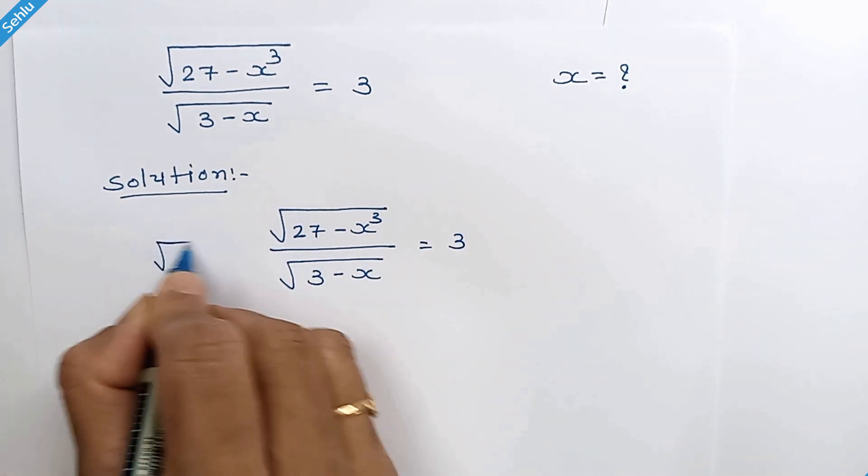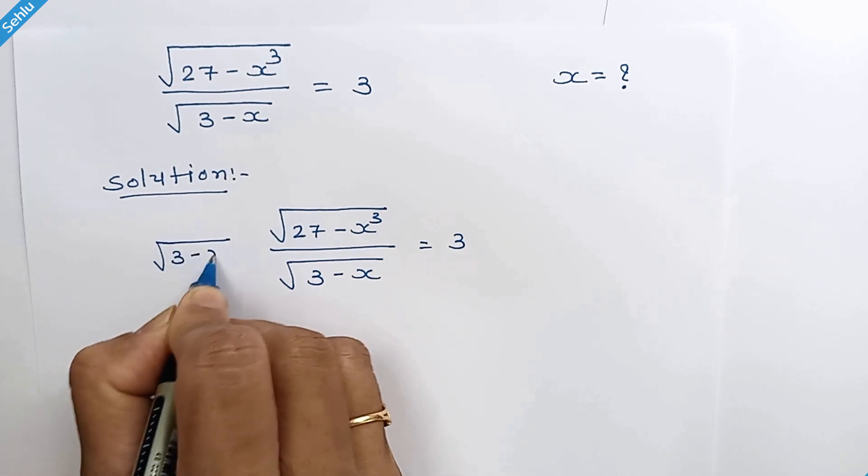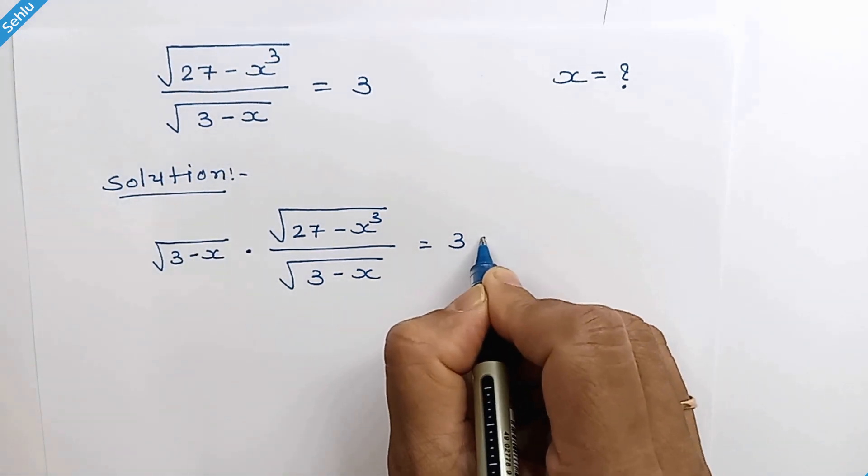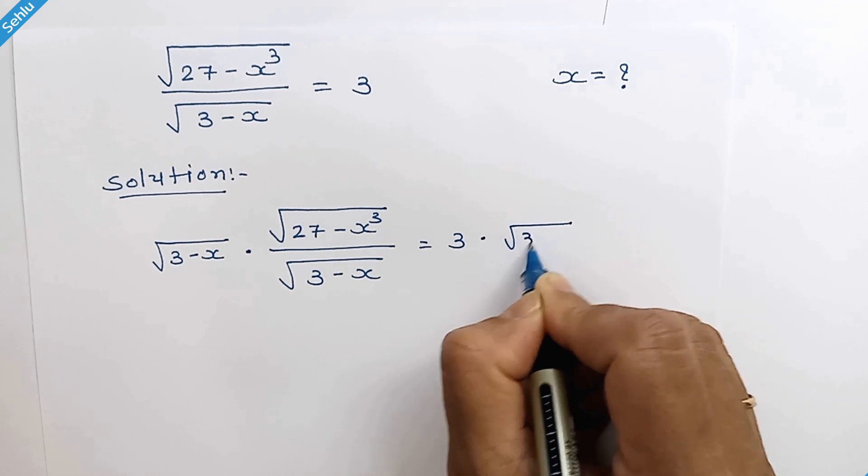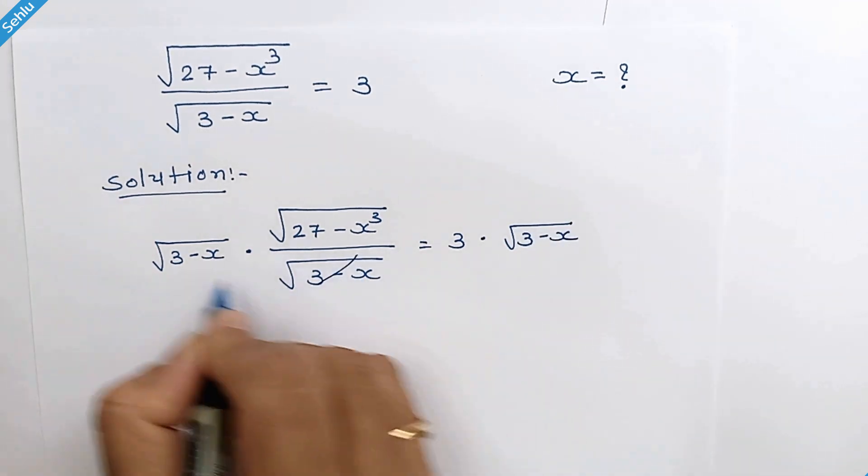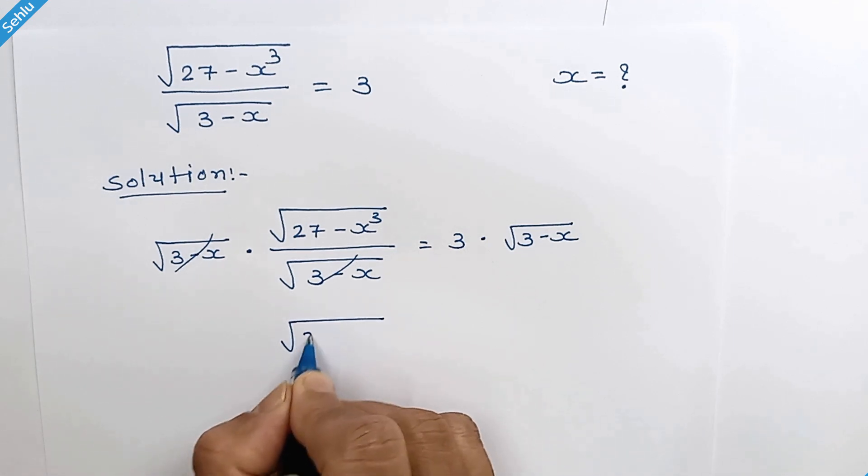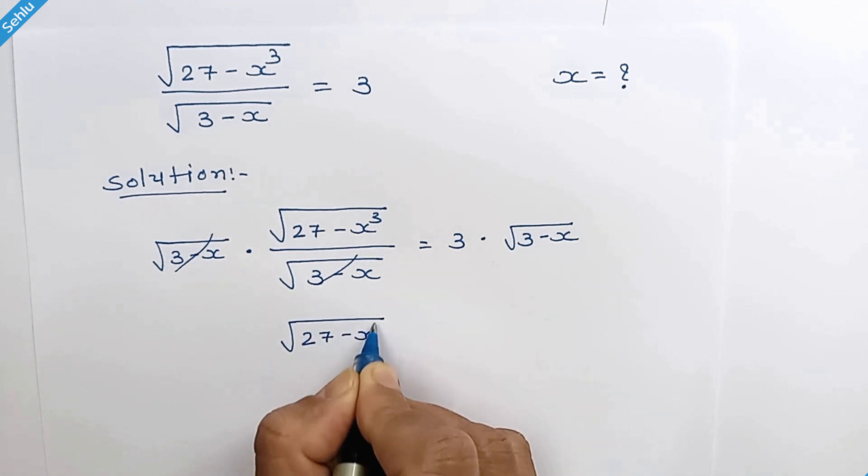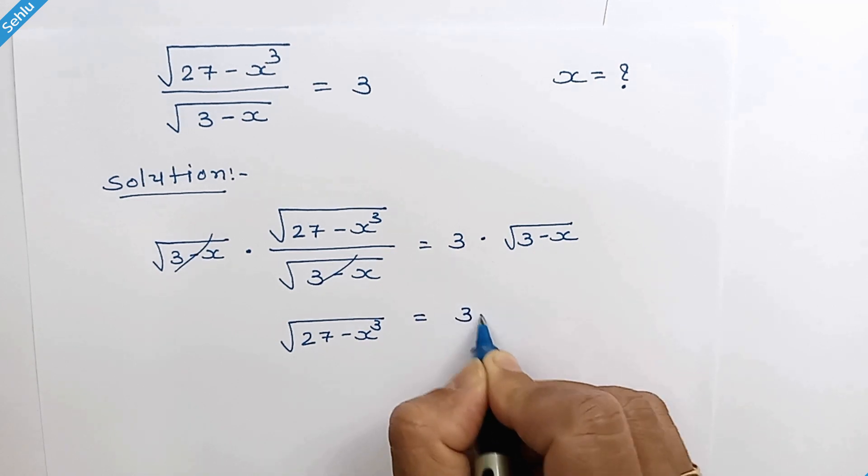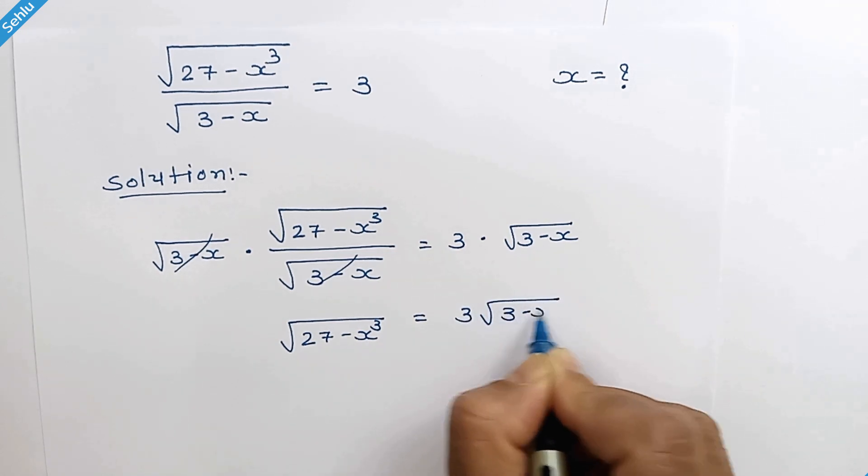In the first step, we will multiply with square root of 3 minus x on both sides. These two get cancelled out. Now we have square root of 27 minus x cube equals 3 times square root of 3 minus x.